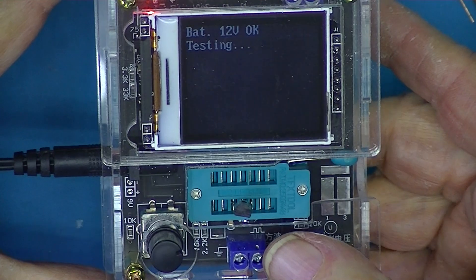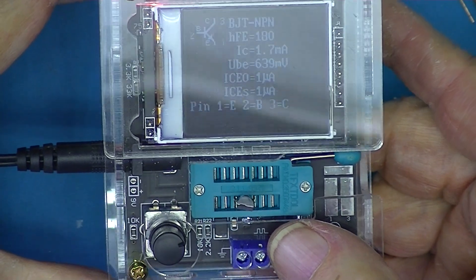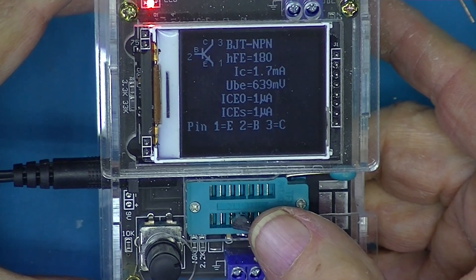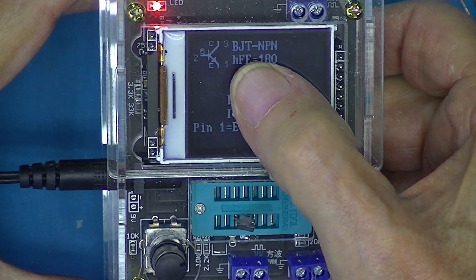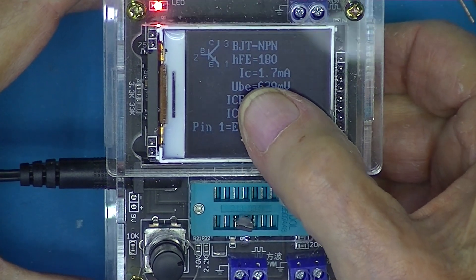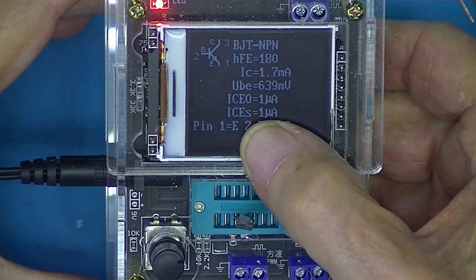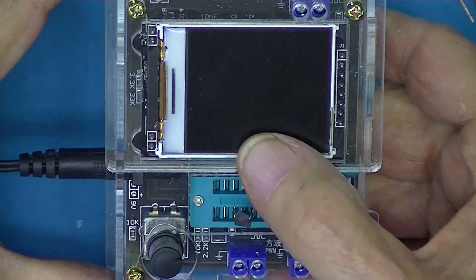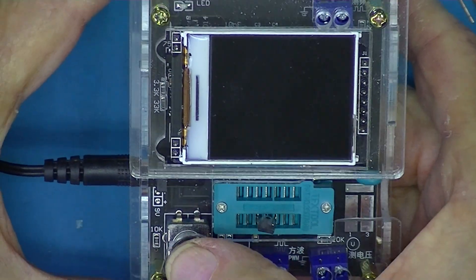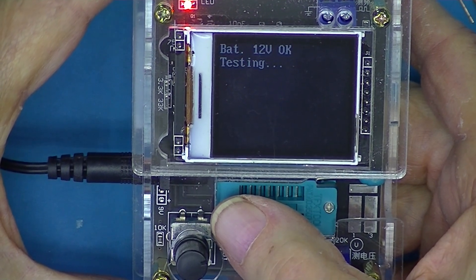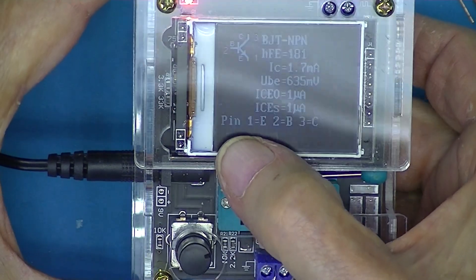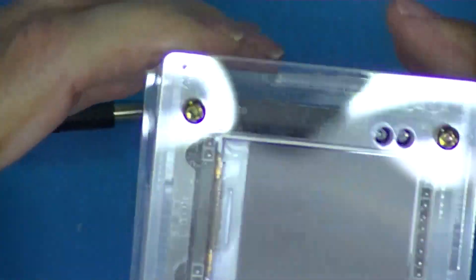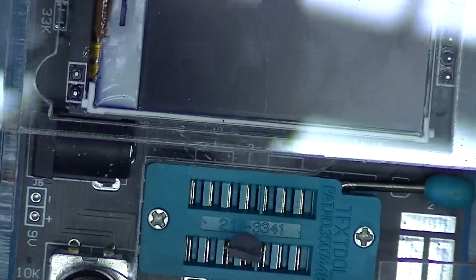Now I press the button. I have it hooked to a 12 volt source, and here we have the 2N2222 in here, which is a bipolar junction transistor, NPN, FHE of 180. Got some test information there. And then it tells me the emitter is connected to pin 1, the base is connected to pin 2, and the collector is pin 3. This doesn't appear to be the standard pin configuration.